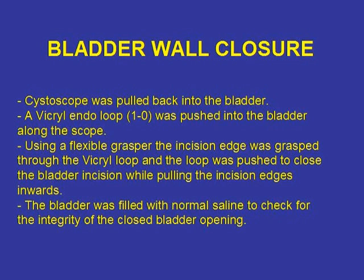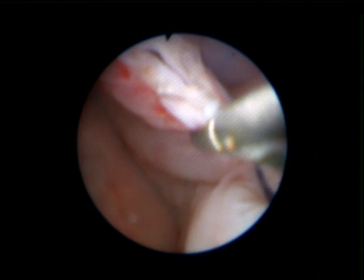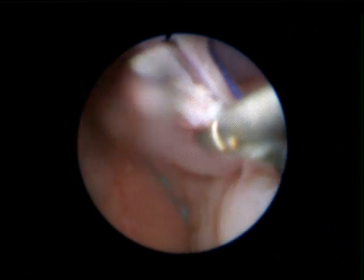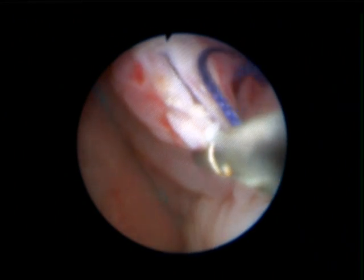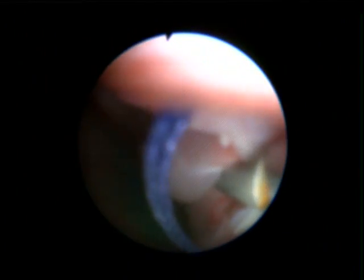For the bladder closure, we tried using catgut endo loops at first, but the catgut swelled up inside the bladder very soon and lost its integrity. The vicryl endo loop was pushed into the bladder along the scope and the edge of the bladder opening was grasped with a flexible grasper after passing the grasper through the endo loop. The loop was then closed around the opening.